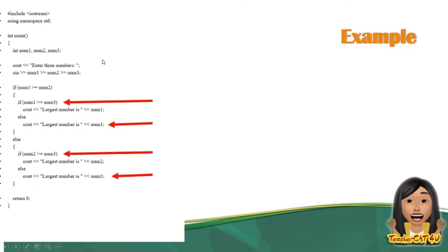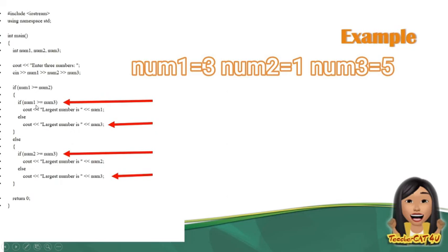Another example dito sa sample natin. Kung titignan ninyo din dito sa given program na ito, ang hinahanap dito is kung ano ang mas malaking value. Si num1 ba, num2, num3. So, int num1, num2, and num3. Meron tayong tatlong variable. Mag-input tayo ng value ng num1, num2, and num3. Pag ang value ng num1 mo is greater than or equal to num2, let's say for example, ang value ng num1 natin is 3. Ang value ng num2 natin is 1. Ibig sabihin, 3 is greater than 1. So, bababa dito ngayon yung program ninyo.